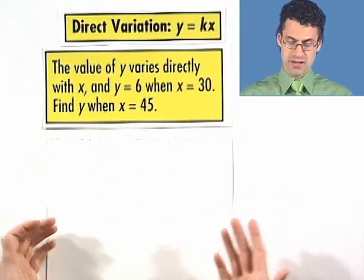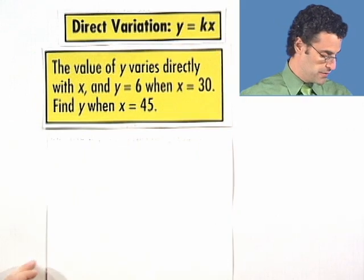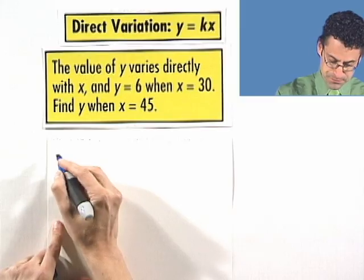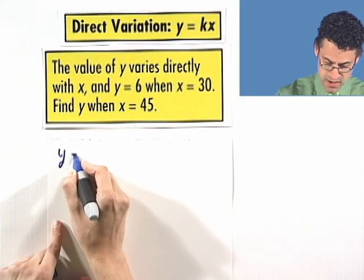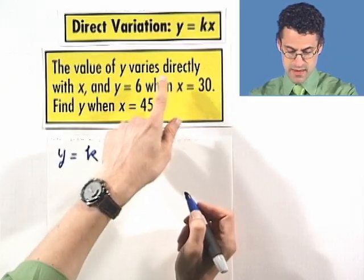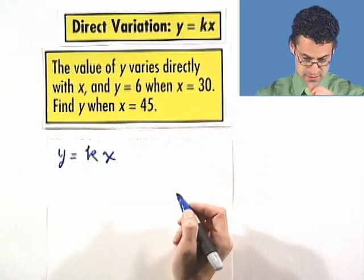One way to do it is just to actually try to find the formula for this direct variation. I know the formula will equal y equals kx, because I'm told that y varies directly with x. So there we have it.